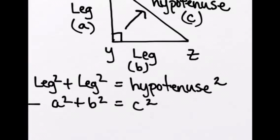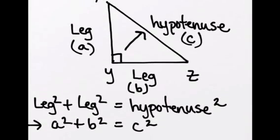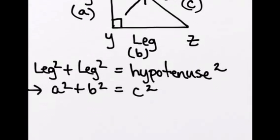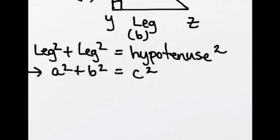And a very popular way of writing this theorem or this formula is we write A squared plus B squared equals C squared. We substitute in variables for the legs. We call one leg A and another leg B, and then we substitute a variable for the hypotenuse and call it C. So the Pythagorean theorem is more popularly referred to as A squared plus B squared equals C squared.